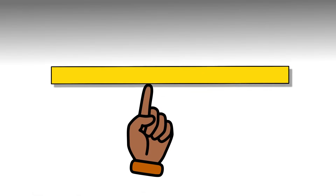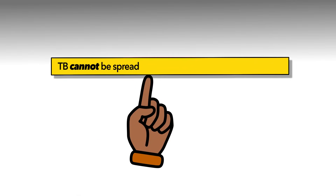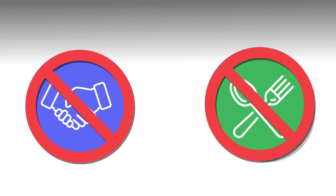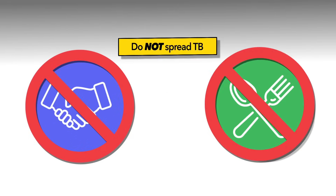Unlike the common cold, TB cannot spread by touching surfaces or other people, such as through handshakes, sharing utensils, or kissing. Once TB germs land on a surface, they cannot cause infection.